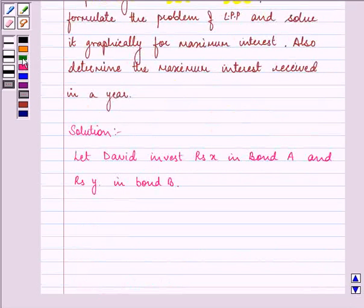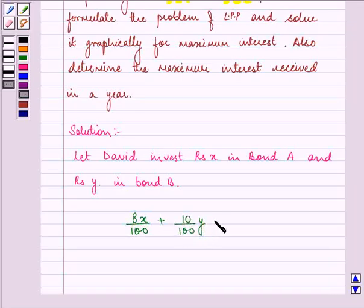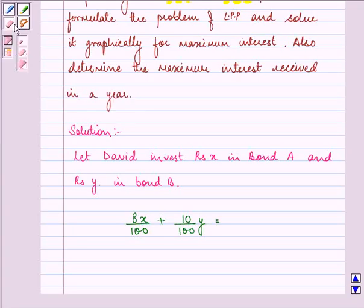Then the interest in bond A is 8%, that means 8% in bond A plus 10% in bond B is the total interest income. And we need to maximize this interest.